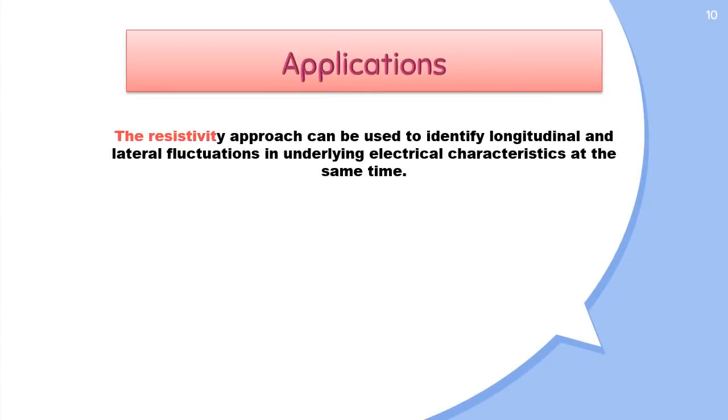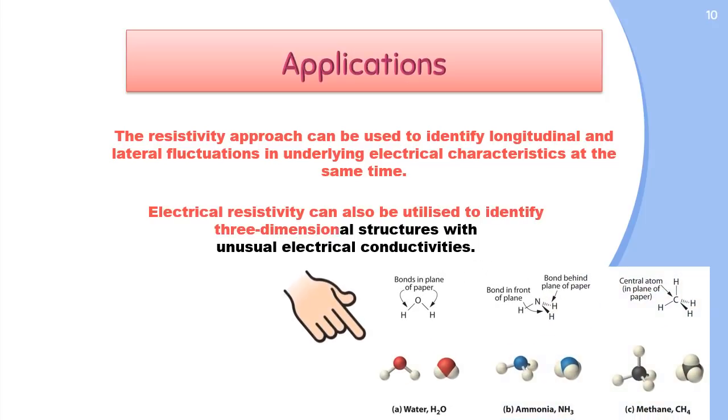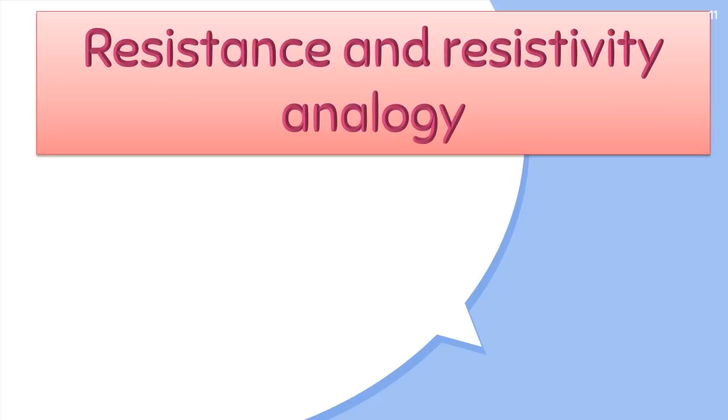The resistivity approach can be used to identify longitudinal and lateral fluctuations in underlying electrical characteristics at the same time. Electrical resistivity can also be utilized to identify three-dimensional structures with unusual electrical conductivities. Both resistance and resistivity define how difficult it is to conduct electrical current through a material, but resistivity is an inherent feature unlike resistance.